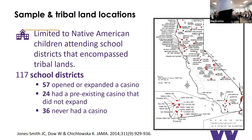California tribes are spread throughout the state — some near big urban centers like San Diego and Riverside, which has very profitable casinos, and others more rural but still with casinos, and others near the Bay Area close to urban centers. We end up with 117 different school districts that encompass tribal lands. Of these, 57 saw the opening or expansion of a casino, 24 had a preexisting casino that didn't expand, and 36 never had a casino.